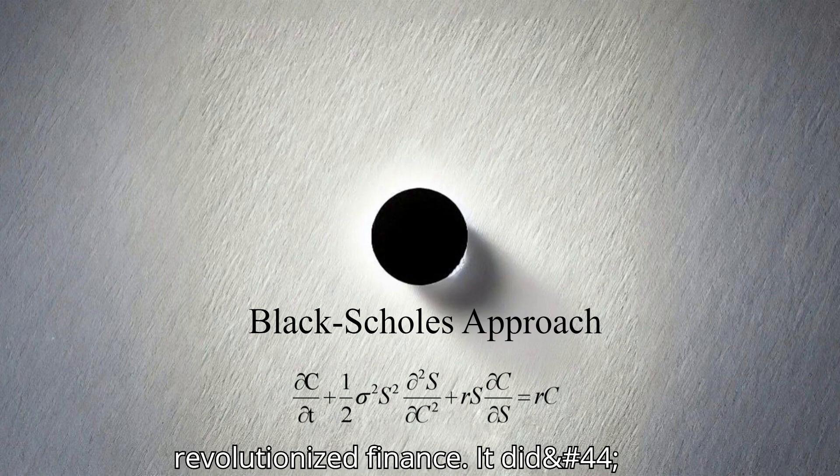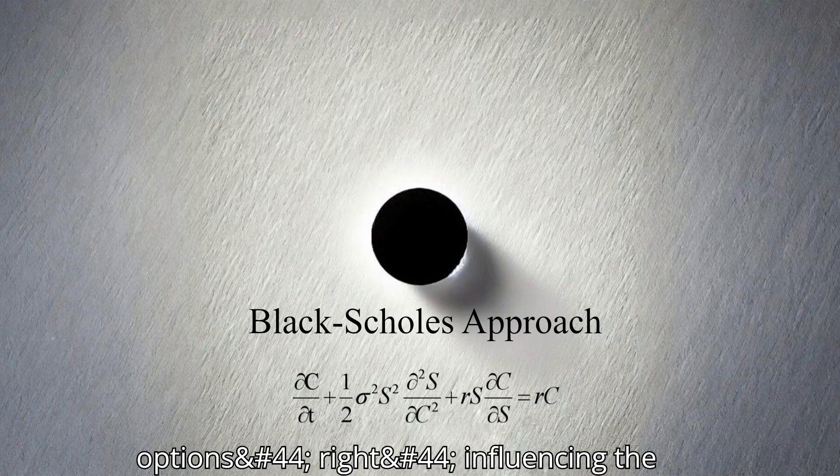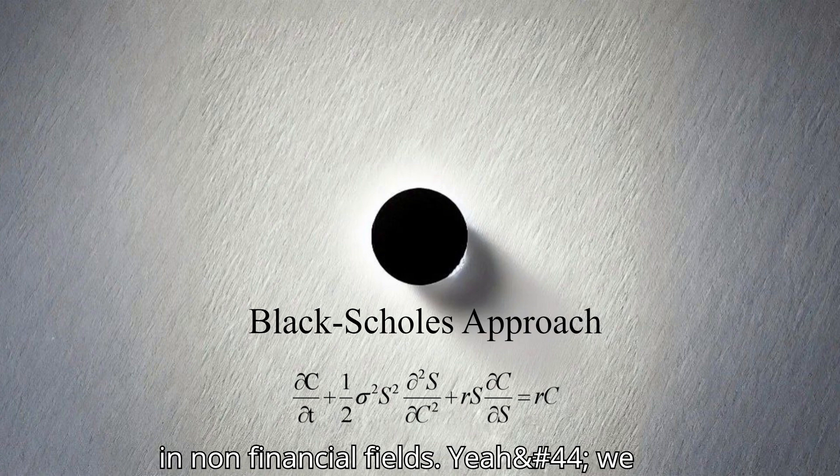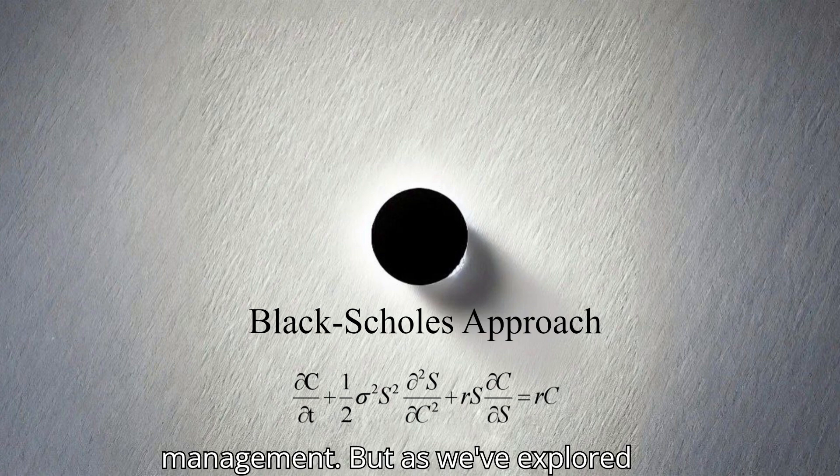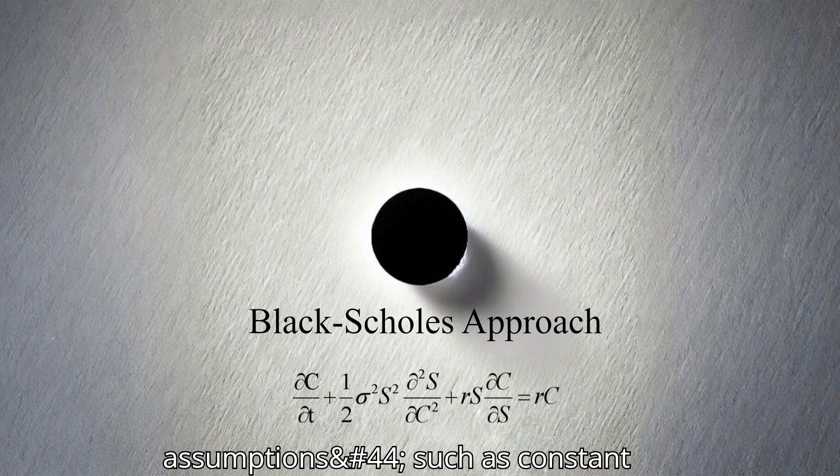So where does this leave us in our understanding of the Black-Scholes model and its legacy? The Black-Scholes model undoubtedly revolutionized finance, providing a groundbreaking framework for understanding and pricing options. Its impact extends far beyond stock options, influencing the valuation of various financial instruments and even finding applications in non-financial fields like real estate, R&D, and customer relationship management. But as we've explored throughout this deep dive, it's not a perfect model. Its reliance on certain assumptions, such as constant volatility and perfectly efficient markets, can lead to inaccuracies, particularly in volatile or unpredictable market conditions.